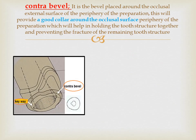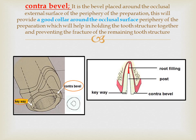If there is supra-gingival tooth structure, a ferrule is used to place a contra-bevel — a bevel placed around the occlusal external surface of the periphery of the preparation. This provides a good collar around the occlusal surface, which helps in holding the tooth structure together and preventing fracture of the remaining tooth structure, as can be clearly seen in this picture.